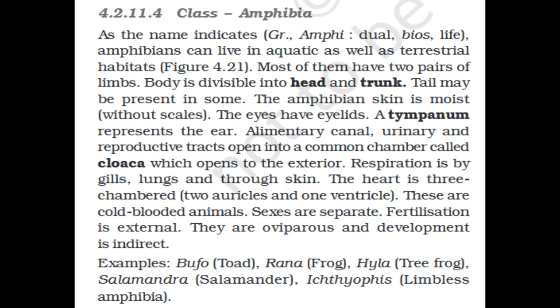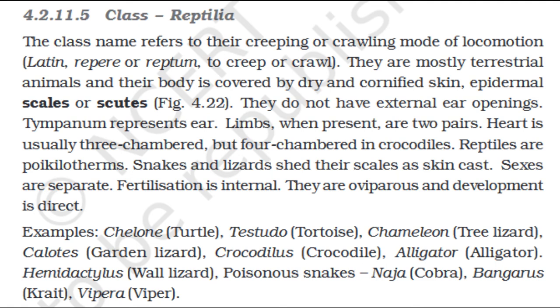Section 4.2.11.4: Class Amphibia. As the name indicates (amphi = dual, bios = life), amphibians can live in aquatic as well as terrestrial habitats. Most of them have two pairs of limbs. The body is divisible into head and trunk; the tail may be present in some. The amphibian skin is moist without scales. The eyes have eyelids. A tympanum represents the ear. The alimentary canal, urinary, and reproductive tracts open into a common chamber called cloaca, which opens to the exterior. Respiration is by gills, lungs, and through the skin. The heart is three-chambered (two auricles and one ventricle). These are cold-blooded animals. Sexes are separate; fertilization is external; they are oviparous and development is indirect. Examples: Bufo (toad), Rana (frog), Hyla (tree frog), Salamandra (salamander), Ichthyophis (limbless amphibia).